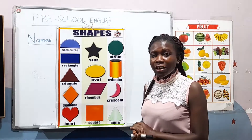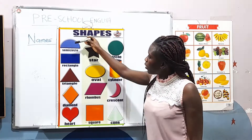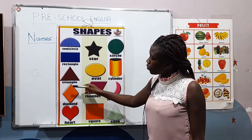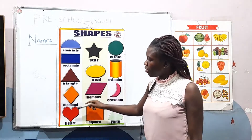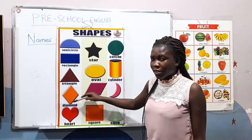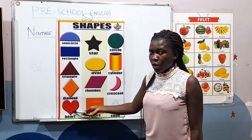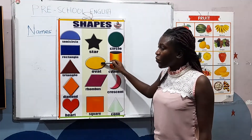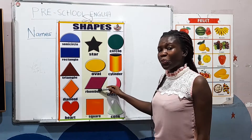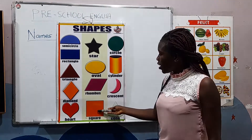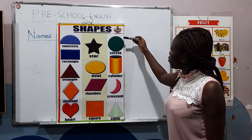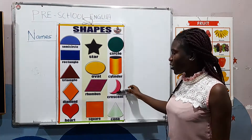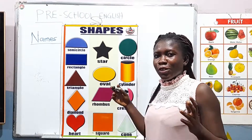But before we name the colors, let's also know the names of the shapes. The first shape here is a semicircle. Then we have a rectangle, a triangle, a diamond, and a hat. This shape here is a star, and we have an oval shape. This shape is called a rhombus, and we have a square, a circle, a cylinder, a crescent, and a cone.